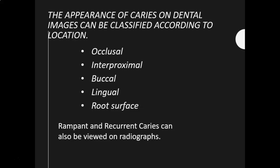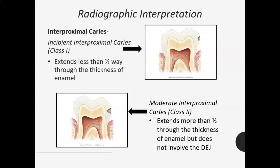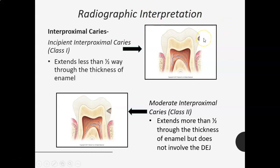For radiographic interpretation of interproximal caries — incipient interproximal caries or Class 1: this little dark notch extends less than halfway through the thickness of the enamel. Here's the little notch — it extends less than halfway through the enamel, so that's Class 1. You're just going to see a tiny notch, and it may not be visible to the naked eye; this is something you'd pick up better on a radiograph than clinically.